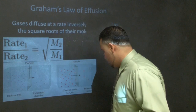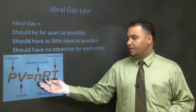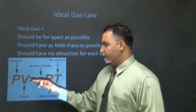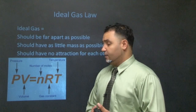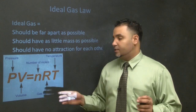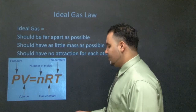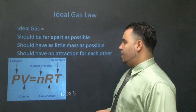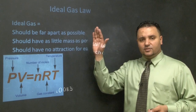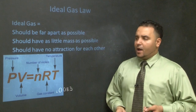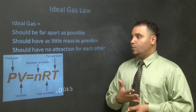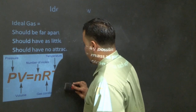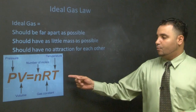The Ideal Gas Law: PV = nRT, where P is pressure in atmospheres, V is volume in liters, n is the number of moles, R is the gas constant (0.083), and T is temperature in Kelvin. Ideal gases are best approximated by noble gases — they should be as far apart as possible, have as little mass as possible, and have no attraction for each other, like helium or hydrogen gas.